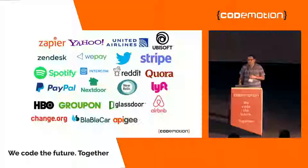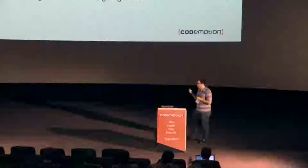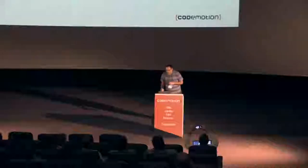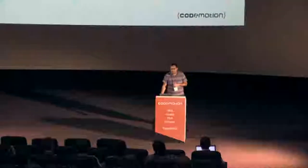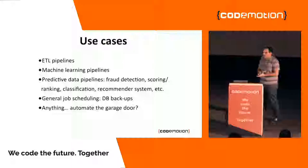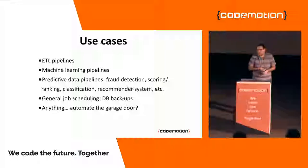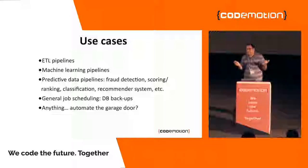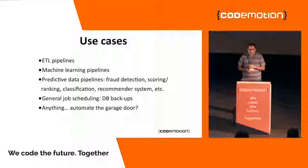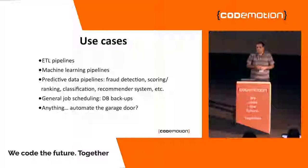There are lots of big names using Apache Airflow. The main use case is ETL pipelines, but we can do pretty much any kind of pipeline: machine learning pipelines, predictive data pipelines for detection, scoring, ranking, classification, recommender systems, and any general job scheduling — for example, a DB backup at 2 AM. Even where Jenkins has been used for those kinds of tasks, Apache Airflow is a better fit. We could even automate our garage door — it's an abstract way of dealing with pipelines.